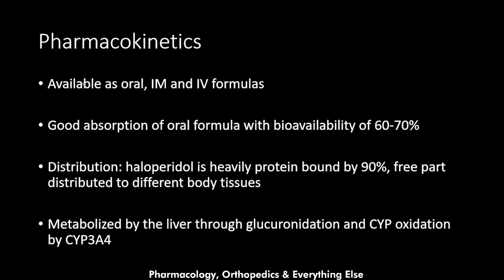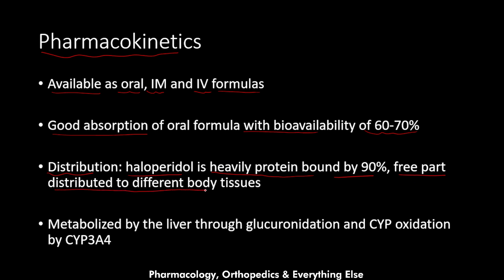Now let's talk about the pharmacokinetics of haloperidol. It is available as oral, intramuscular, and intravenous formulas. The oral formula has good absorption with a bioavailability of 60 to 70 percent, while the intramuscular and intravenous formulas have 100 percent bioavailability. For distribution, haloperidol is heavily protein-bound at 90 percent. The free 10 percent is distributed to different body tissues including the central nervous system where it has its actions. It is metabolized by the liver through glucuronidation and cytochrome P450 oxidation by the CYP3A4 enzyme.